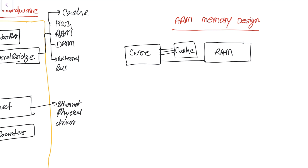Accessing cache takes less time compared to accessing RAM memory. Beyond RAM, there is a secondary memory or other type of memory that is even further from the core.